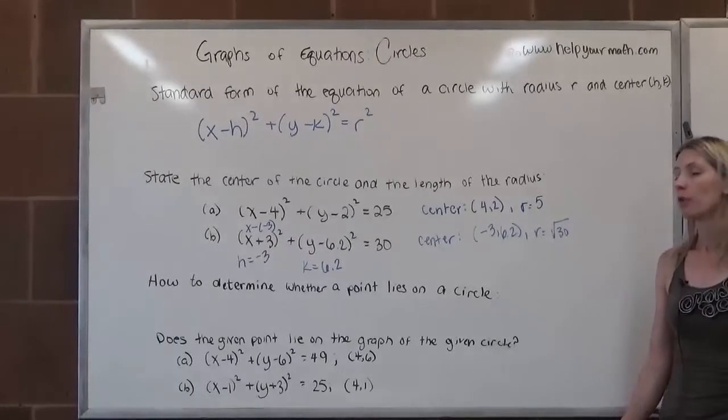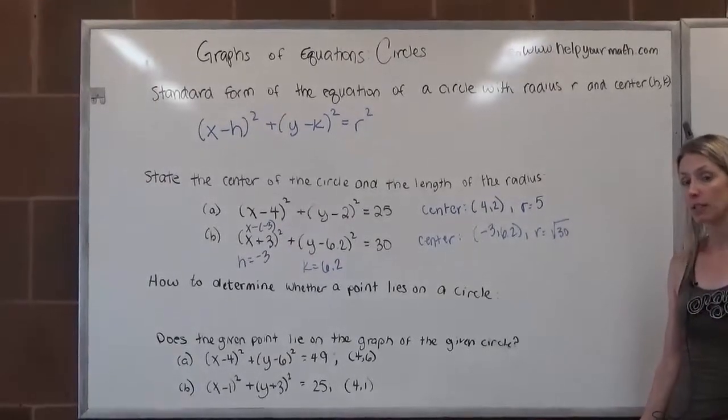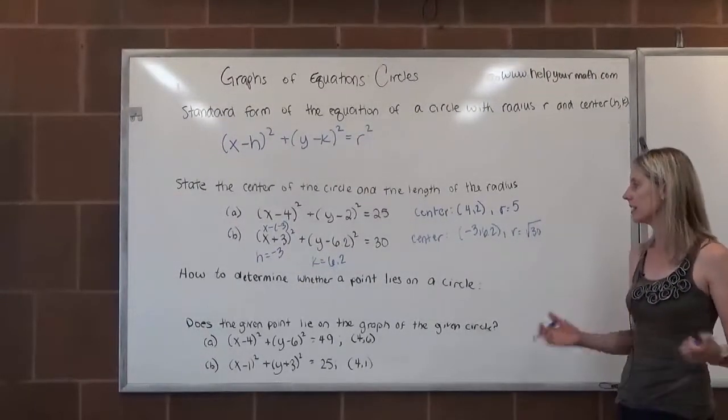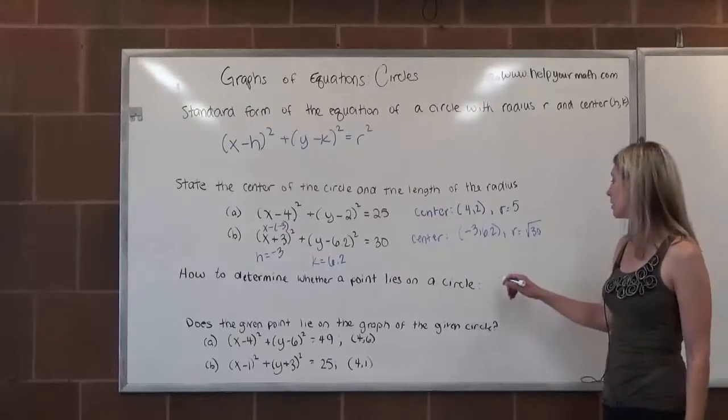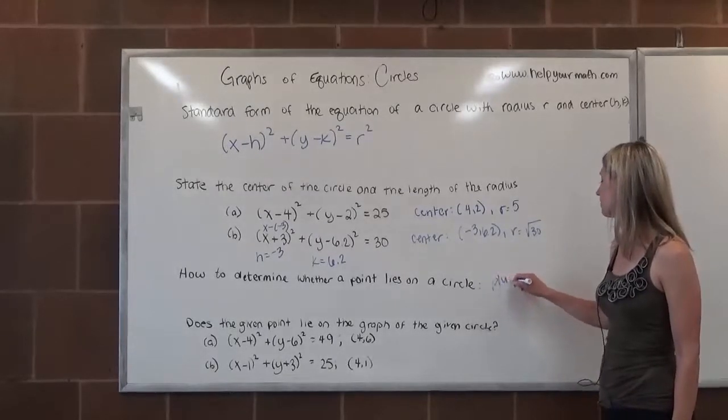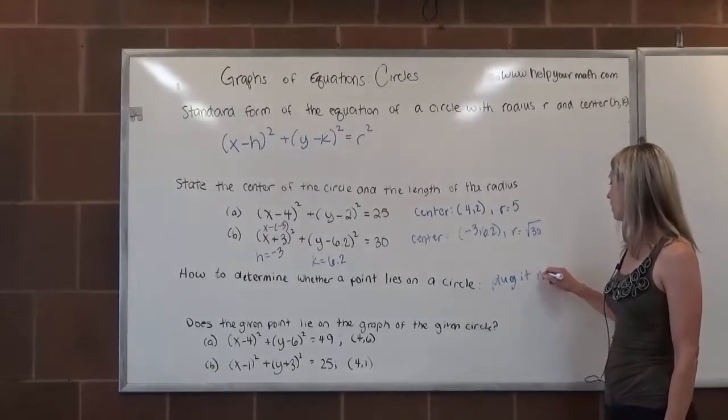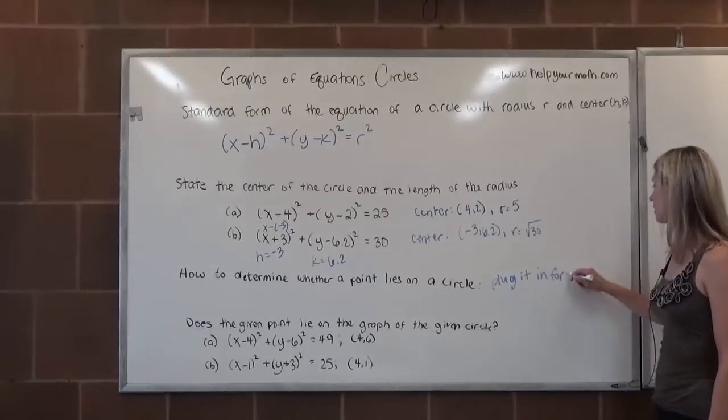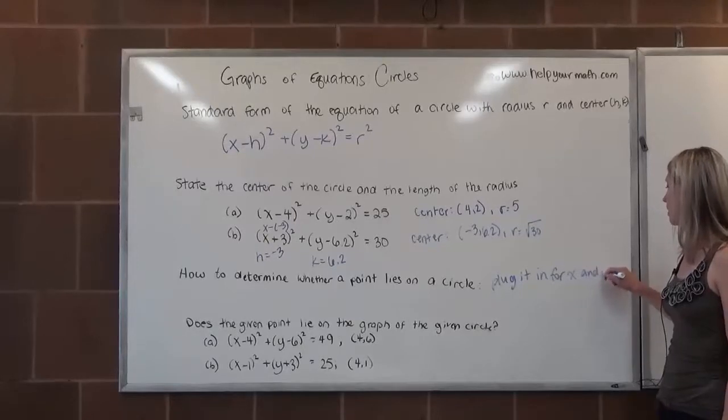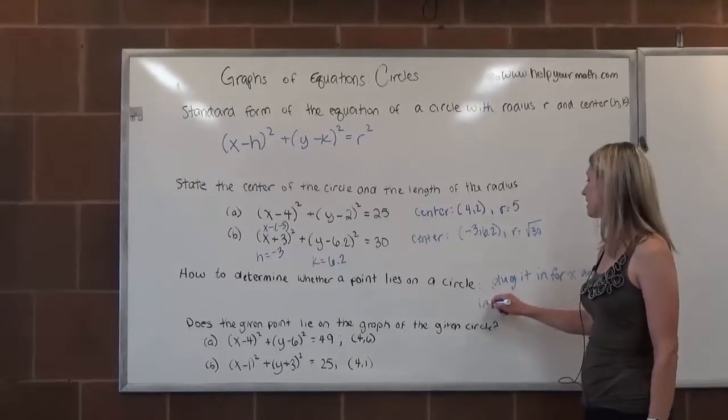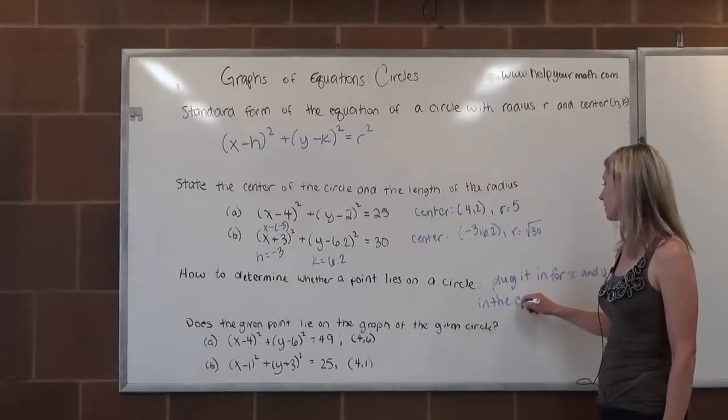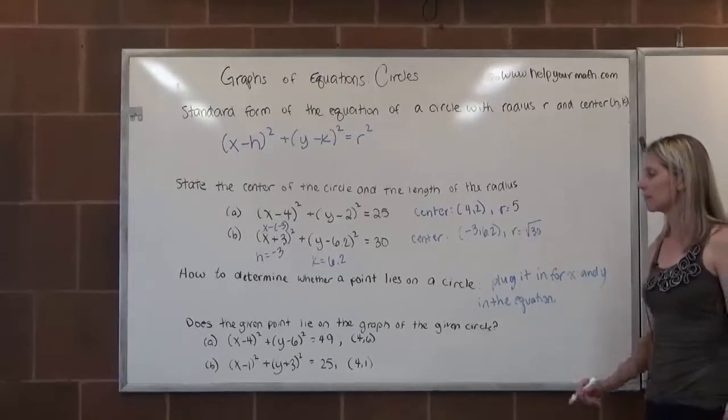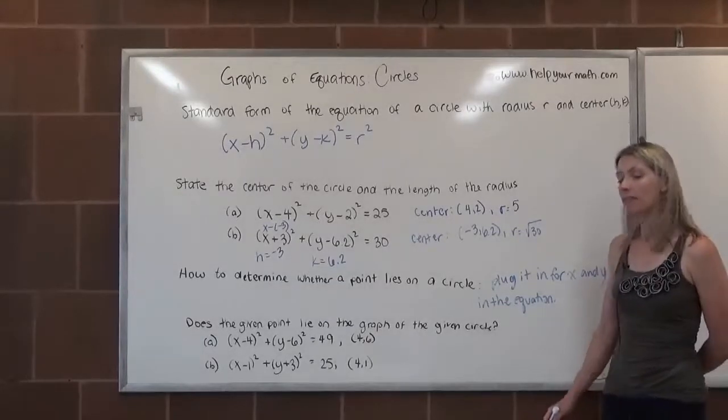How do we determine whether a point lies on a circle or not? Well, what we would do is plug it in for x and y if we're given the equation and see if it makes a true statement. Let's look at some examples of that. Does the given point lie on the graph of the given circle?